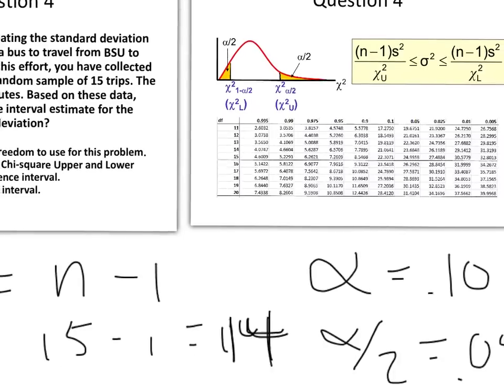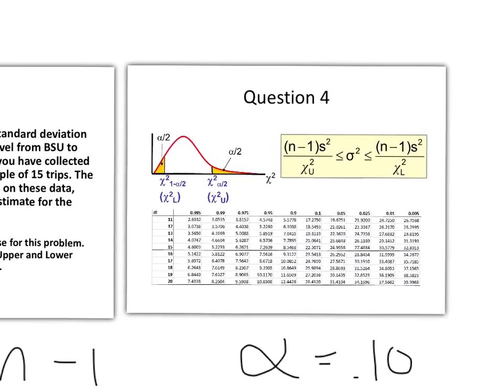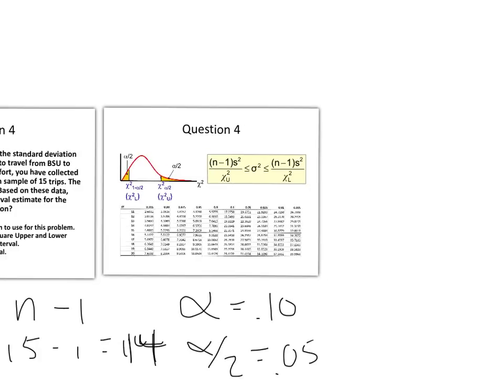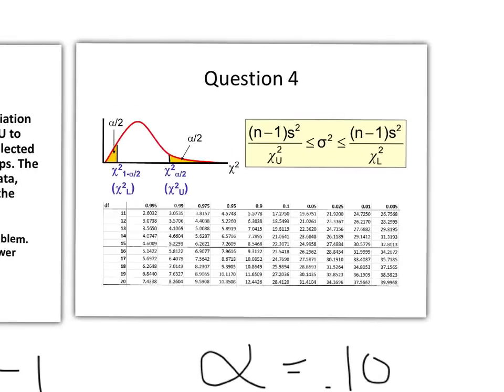So let's take a closer look at that now. So in the first case here, alpha over 2 is 0.05, and our degrees of freedom is 14. Let me get the pen back. In this column here, and line it up with degrees of freedom of 14. So here, then, is our upper chi-square value.